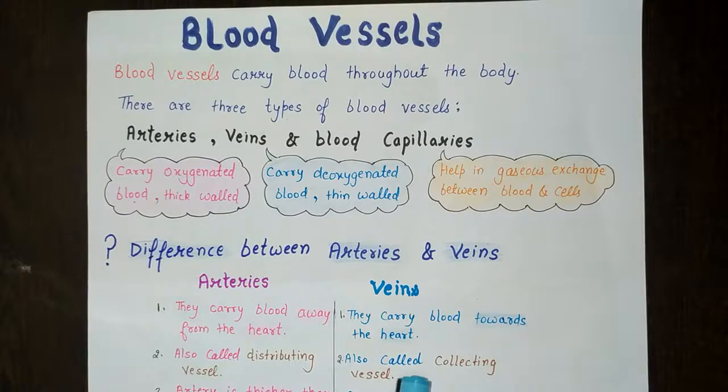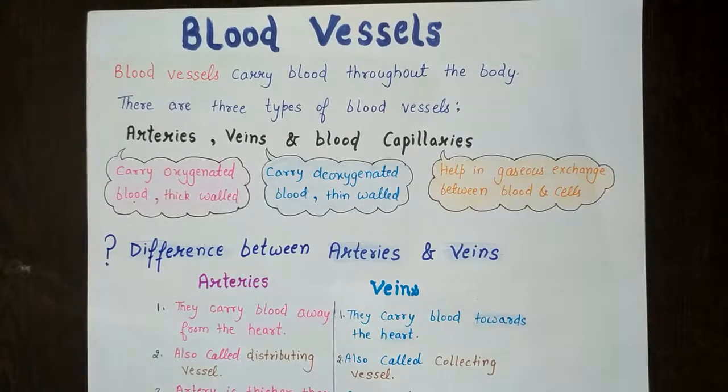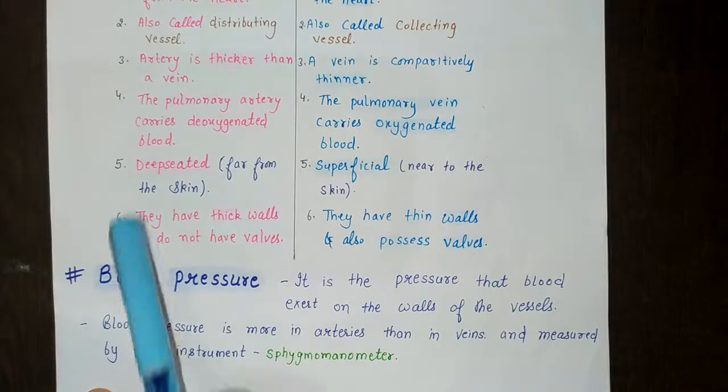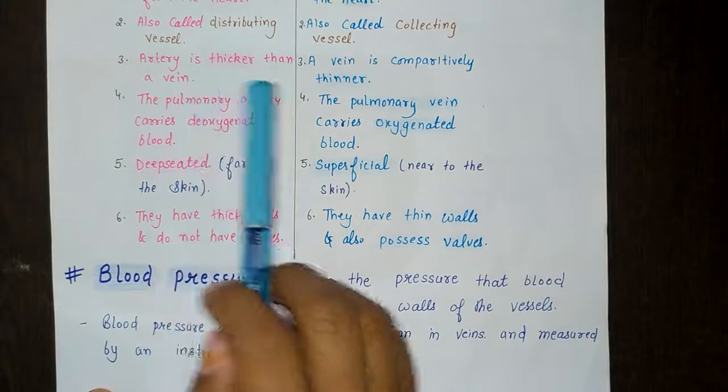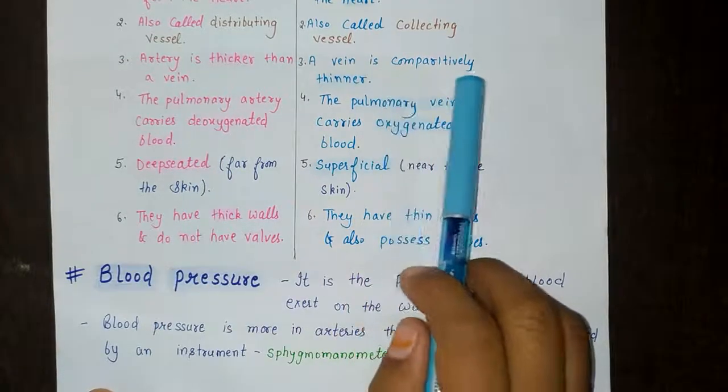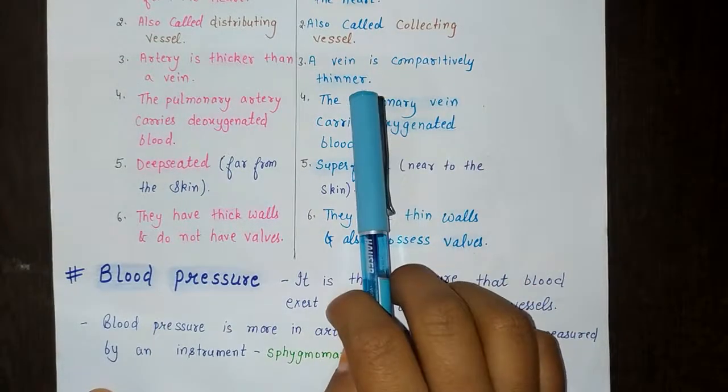Veins collect blood from the whole body and carry it to the heart, so they are also called collecting vessels. The third point is that arteries are thicker-walled than veins, which are comparatively thinner.